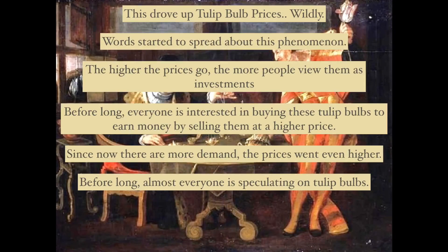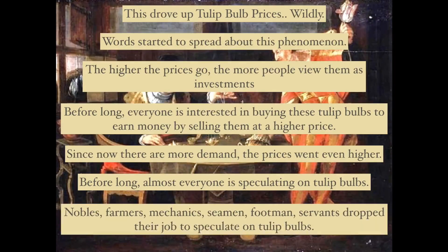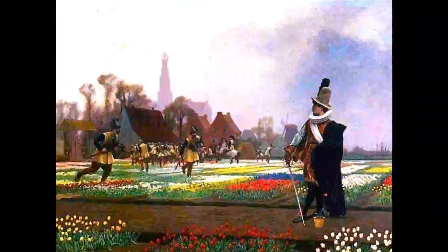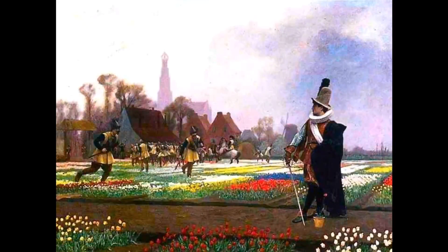Almost everyone started speculating on tulip bulbs — nobles, farmers, mechanics, seamen, footmen, servants dropped their jobs to speculate on tulip bulbs. Like the stock market in 1997, everybody was getting rich from the share market — taxi men, doctors, anyone. Everybody was a pro in the share market and everybody dropped their job because it was so easy to make money. This is real history — you can Google this story.